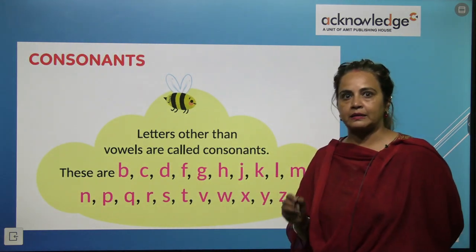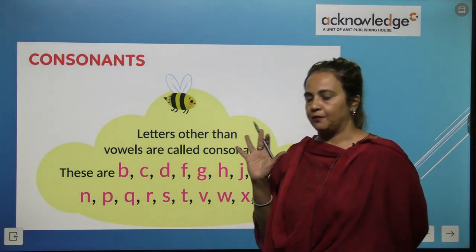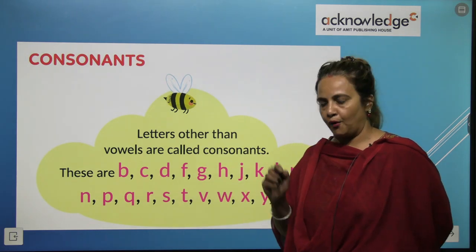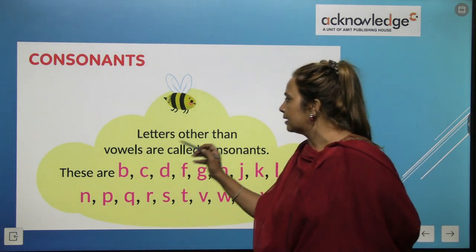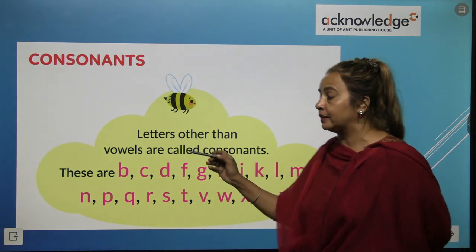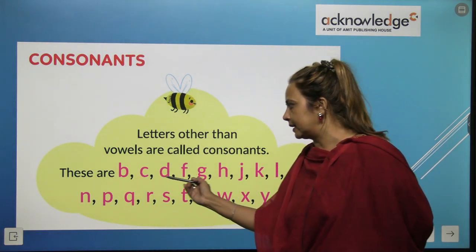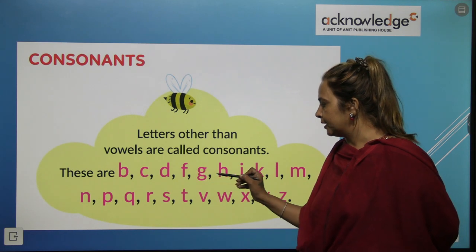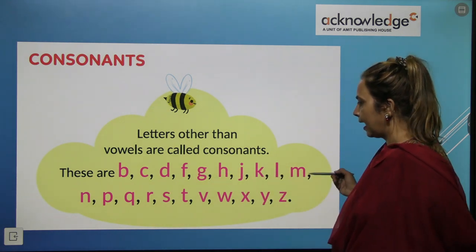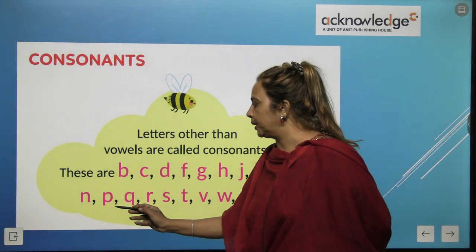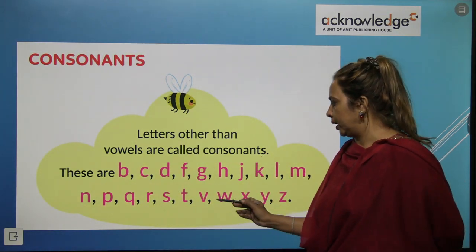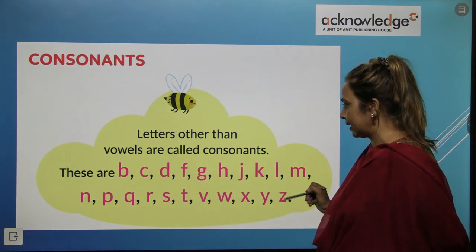And what are consonants? In English alphabets, there are 26 letters. Five letters A, E, I, O, U are vowels. Letters other than vowels are called consonants. These are B, C, D, F, G, H, J, K, L, M, N, P, Q, R, S, T, V, W, X, Y, Z.